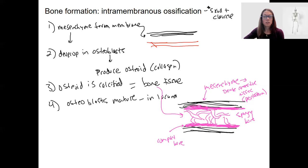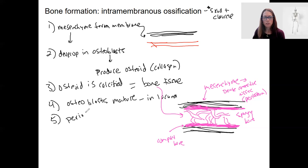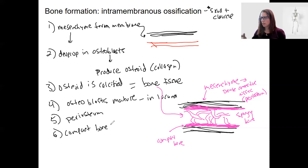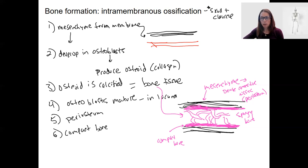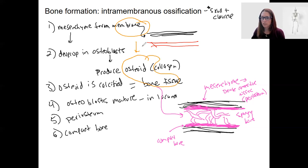To be complete: step five — we had that periosteum form from the edges, and we want to make sure we have that compact bone at those two surfaces. This is a developmental process, but it actually also occurs during thickening and remodeling throughout life. The key idea of intramembranous ossification is that it is from an existing membrane where osteoid and bone tissue — the calcified version — is created.